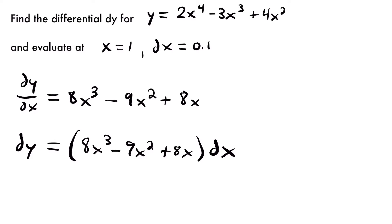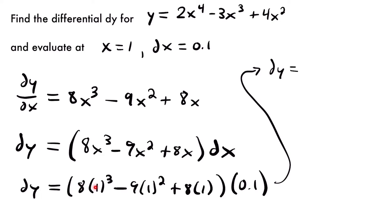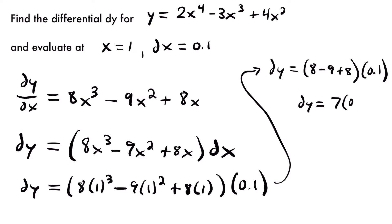We want to evaluate this at x equals 1 and dx equals 0.1. Plugging in, dy equals 8 times 1 cubed minus 9 times 1 squared plus 8 times 1, times 0.1. That gives us 8 minus 9 plus 8 equals 7, times 0.1. So dy is equal to 0.7 when evaluated at x equals 1 and dx equals 0.1.